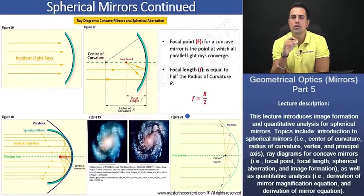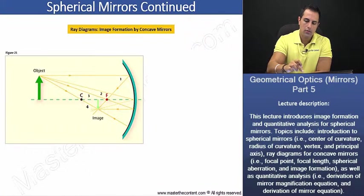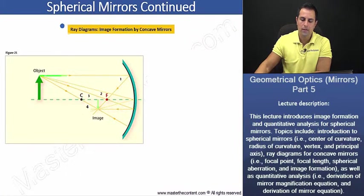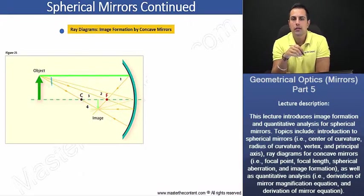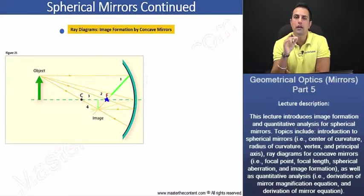Alright, let's now shift our attention towards image formation by concave mirrors. Now, on the previous slide, we had just learned that parallel rays close to the principal axis striking a concave mirror are going to reflect through.